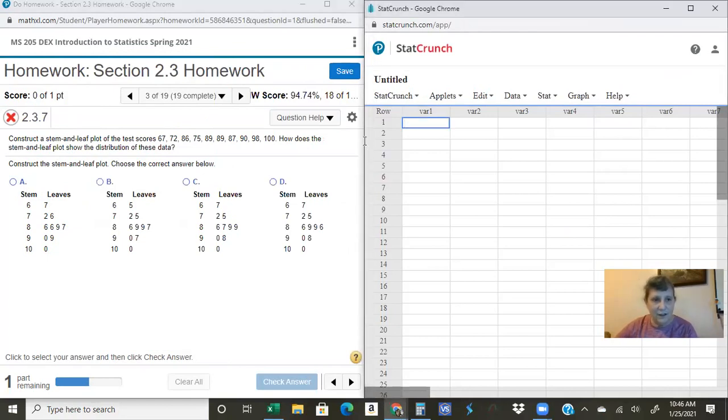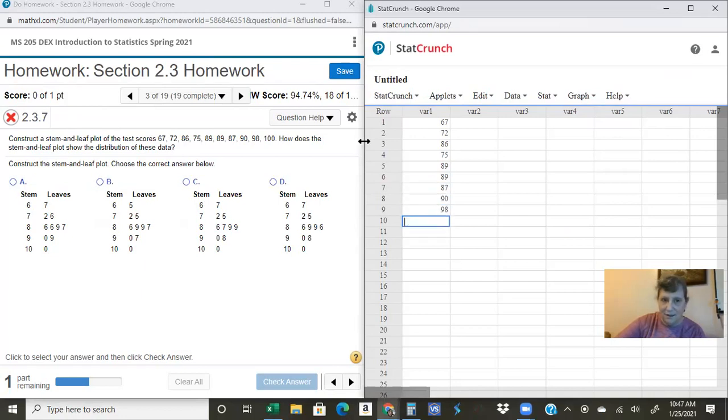So if I come over here and just type these numbers in. So 67, 72, 86, 75, 89, 89, 87, 90, 98, 100. Okay there's my numbers. Of course I should double check them.